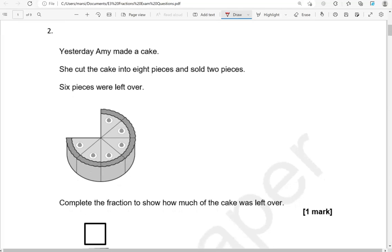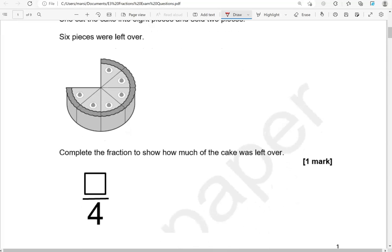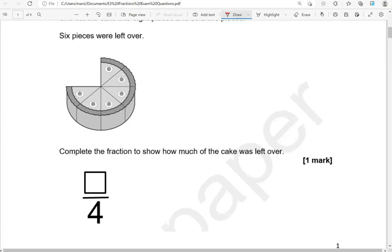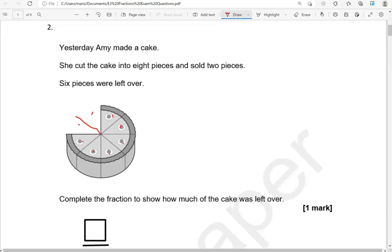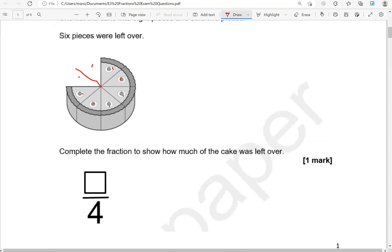Yesterday, Amy made a cake. She cut the cake into eight pieces and sold two pieces. Six pieces were left over. Complete the fraction to show how much of the cake was left over. As you can see, the cake has been split into eight pieces. Two of them were sold. So we have six-eighths left.